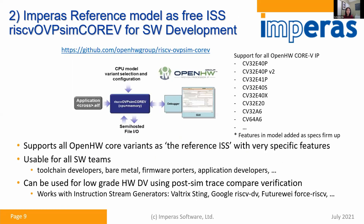The second use case is for software development. With the free RISC-V OVP-SIM Core 5, you can use it on all the Open Hardware variants. It's usable for all software development teams, including toolchain developers and bare metal firmware application developers. It can even be used for low-grade, simple post-simulation trace compare design verification. It works with instruction stream generators from Valtrix, Google, and OpenHW.